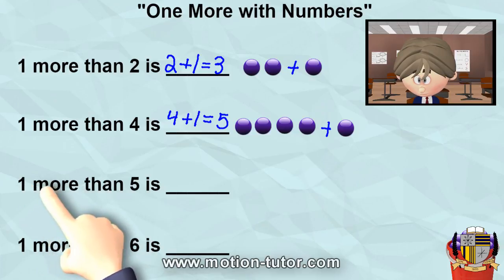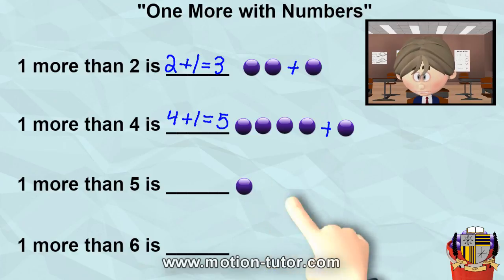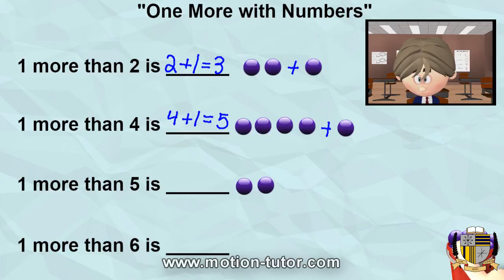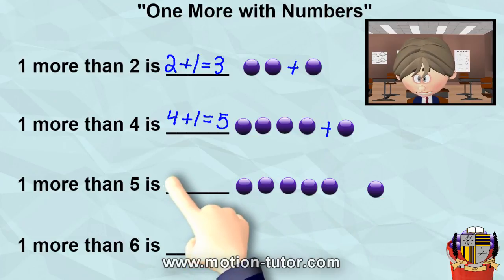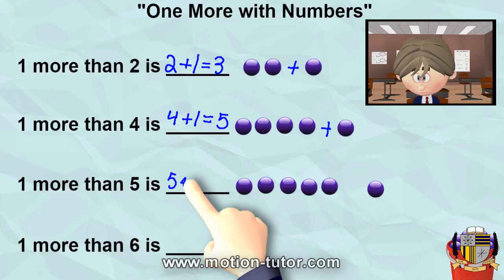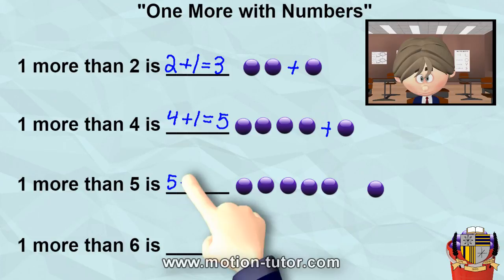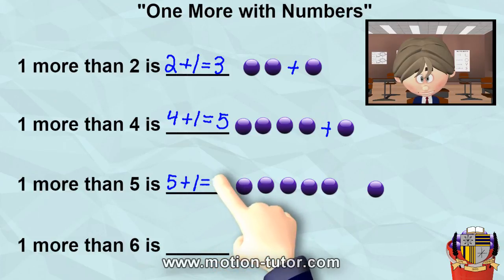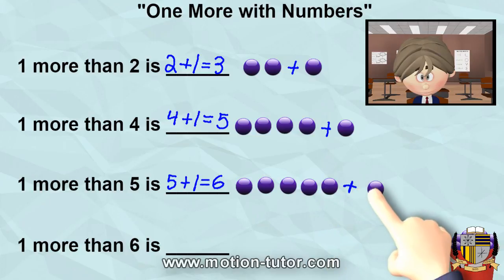Another example. One more than five is... let's see. One more than five is six. So that means five plus the one more is equal to six. One, two, three, four, five plus one — six.